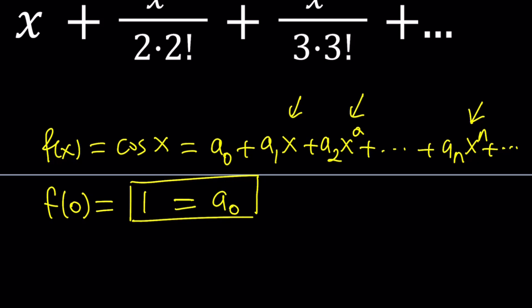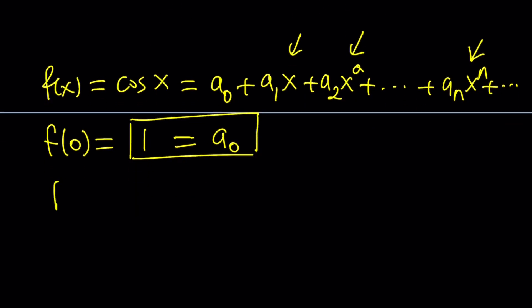Now, we do need to get the values of other constants, too, or coefficients. a sub 1, a sub 2, and so on and so forth. How do you do that? You need to get rid of this and make this a constant. That can be done by differentiation.